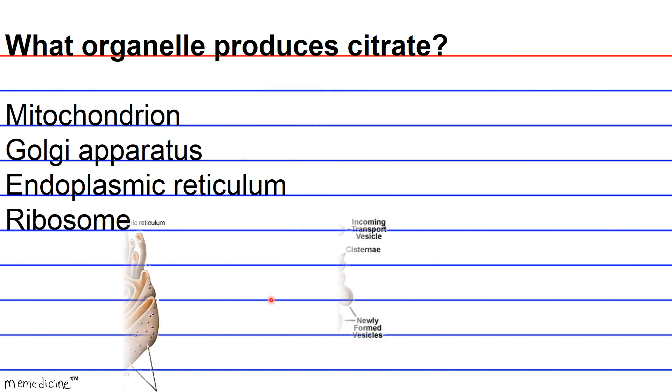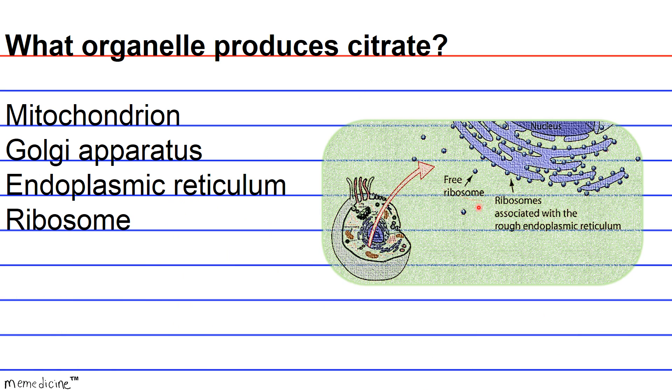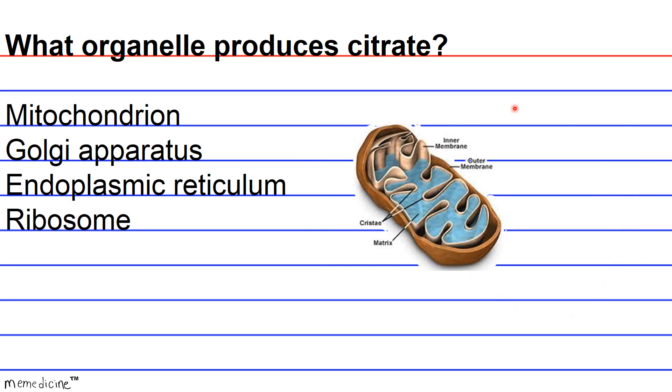So the Golgi apparatus and the endoplasmic reticulum are mainly the sites of protein synthesis and trafficking, with many other secondary functions that are unrelated to catabolic metabolism. When I say catabolic, I mean the breaking down of molecules. Ribosomes are RNA-protein complexes that basically synthesize polypeptides from messenger RNA transcripts. The citric acid cycle, though, it occurs in the mitochondria.